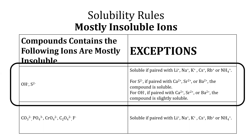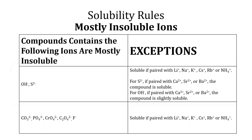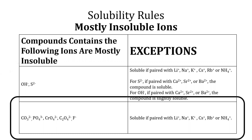Hydroxide salts of calcium ion, strontium ion, or barium ion are considered slightly soluble in water. Salts of carbonate ions, phosphate ions, chromate ions, oxide ions, or fluoride ions are insoluble unless paired with alkaline metal ions or ammonium ions, where they are considered soluble in water.